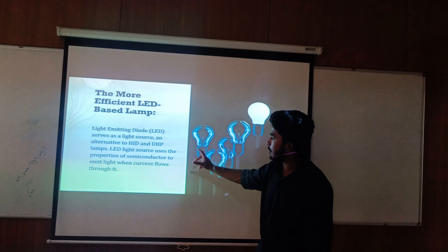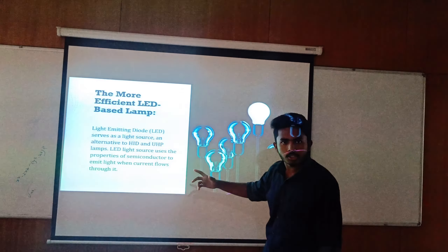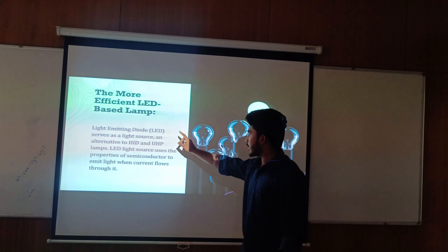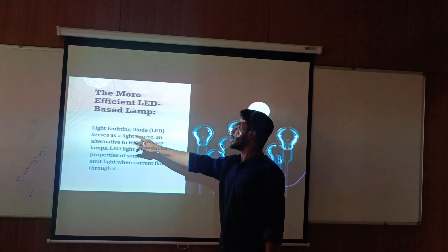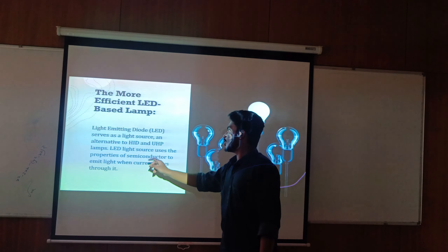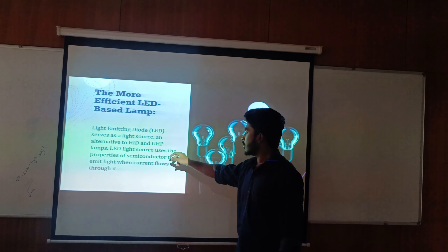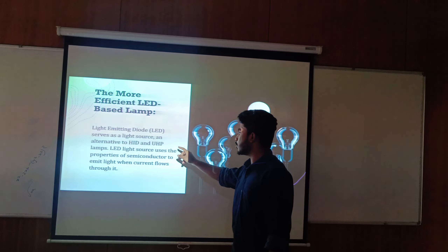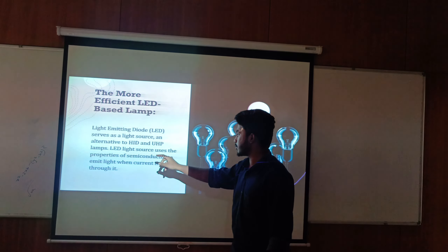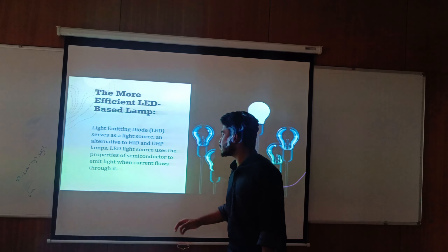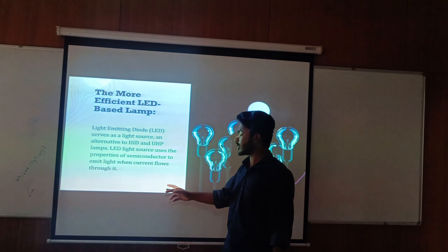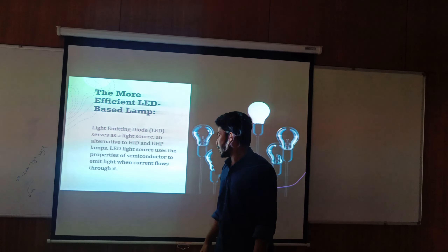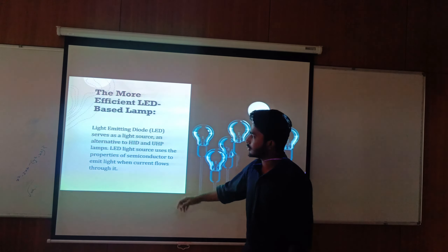The second light source is the LED-based lamp. LED means Light Emitting Diode. It serves as a light source alternative to HID and UHP lamps. LED light sources use properties of semiconductors to emit light when current flows through them.